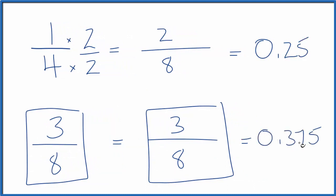And if it helps, you could add another 0 here. That doesn't change anything. 0.375—that's a larger number than 0.25.